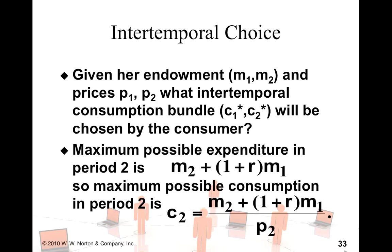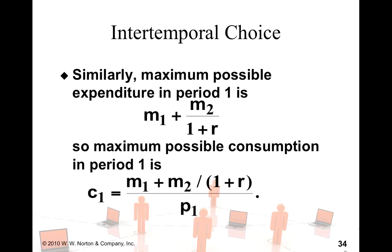Now the intertemporal choice problem becomes that the consumer has to choose an optimal intertemporal consumption bundle, which is c1 star, c2 star, given the prices p1, p2. The maximum possible expenditure in period 2 that could be done is m2 plus 1 plus r into m1. So this is the future value of my income. So the maximum possible consumption I could have in the second period is going to be the total future value of the lifetime income divided by the price of the second period consumption good. So think of this as an intercept on the y-axis.